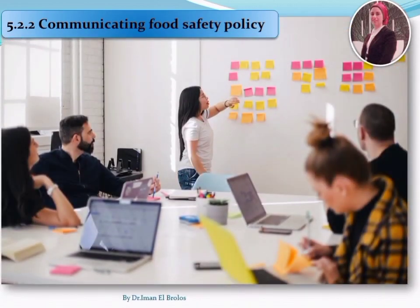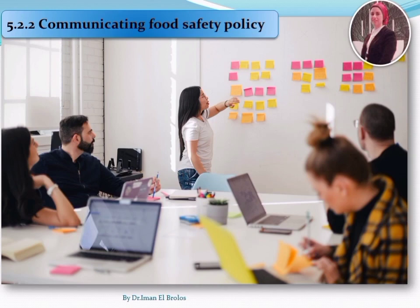After the food safety policy has been approved, it shall be communicated to every interested party, including customers, external providers, and operators on request. The food safety policy shall be reviewed periodically by top management to ascertain its adherence to the organization's context. The food safety policy should be communicated through annual staff appraisal, website, notice boards, supplier contracts and evaluations, induction training, and recruitment.